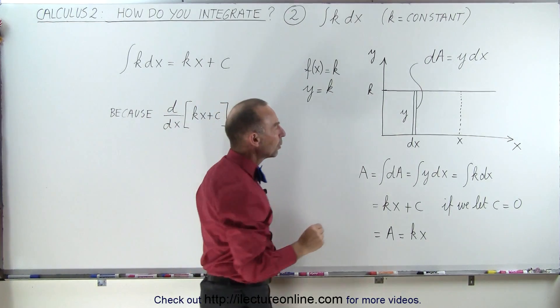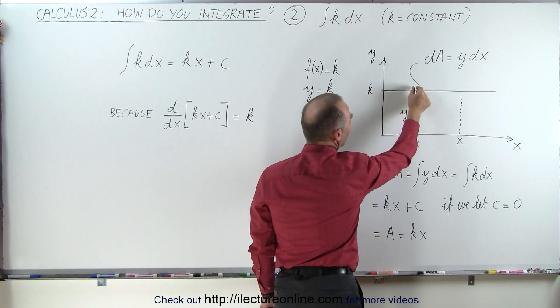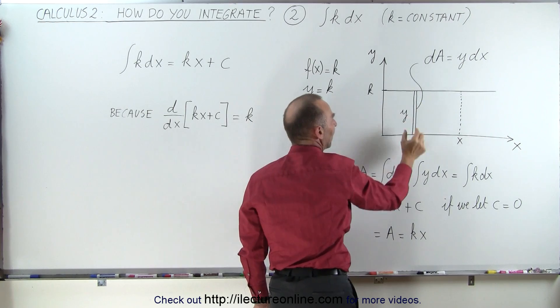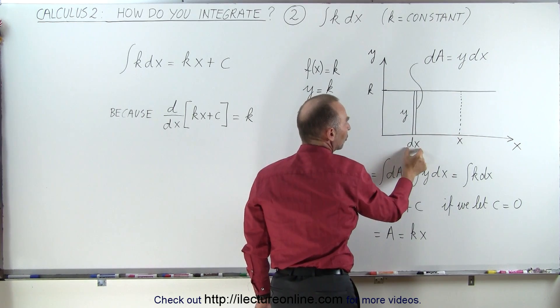How does that work? Well, let's take a small little strip right here that has the height from there to the function. The function is y, so the height is y. And the width of that little strip is equal to dx.